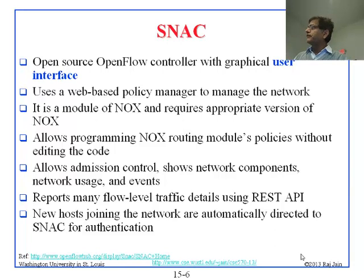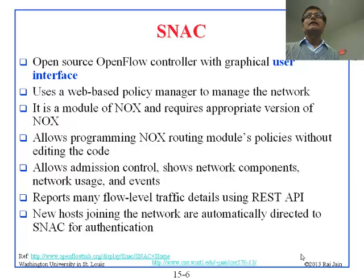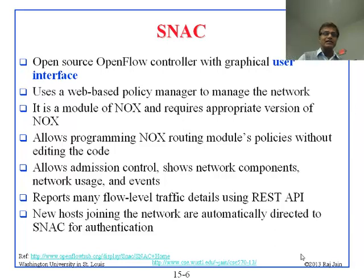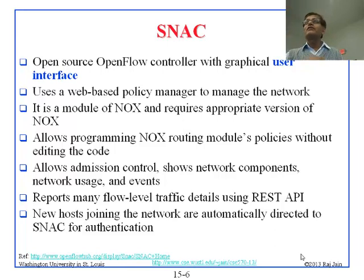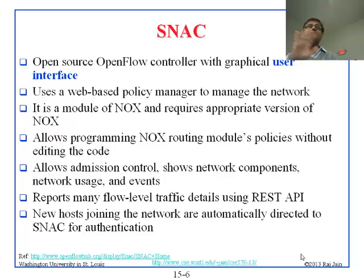SNAC reports many flow-level traffic details using a REST API — basically HTTP-based commands where you can issue GET or PUT commands to SNAC and it will return whatever data you are asking for. New host-launched networks are automatically directed to SNAC for authentication. So to summarize: NOX is the big, first controller; POX is the Python-based version; SNAC is the web-based API. That's all.